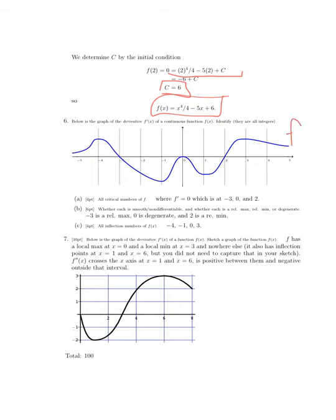Here's a graph of f'(x), and I ask questions about f. Where are the critical numbers of f? When f has a critical point, f' is zero or undefined. So I'm asking where is f' zero or undefined? It's never undefined, but it is zero at these three points: at x = -3, 0, and 2. I need to determine whether each is smooth or non-differentiable, and whether they're min, max, or degenerate. Each is smooth because the derivative is continuous.